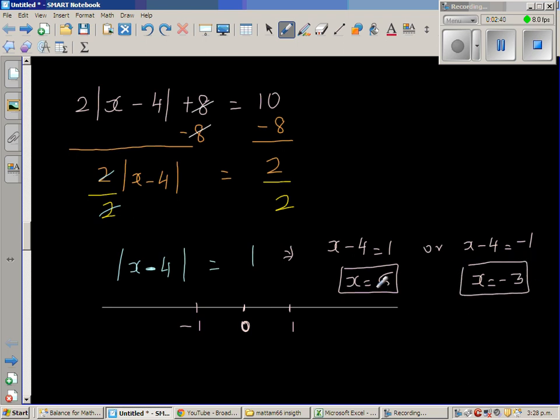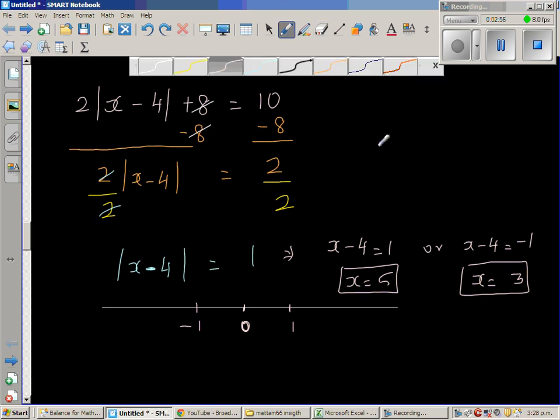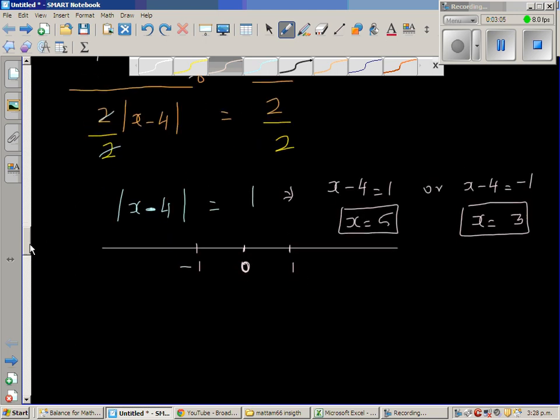And you can check your answer by putting this back into this. So we can do it directly. 5 minus 4 is 1 and modulus of 1 is 1. And this has to be 3, sorry. So this is always good to check. So 3 take away 4 is negative 1. So 3 take away 4 is negative 1 and modulus of negative 1 is 1.